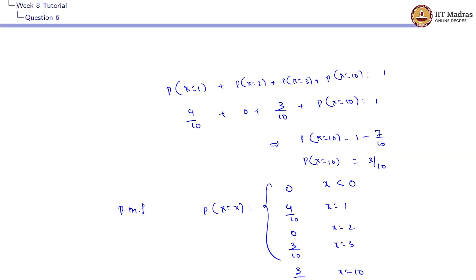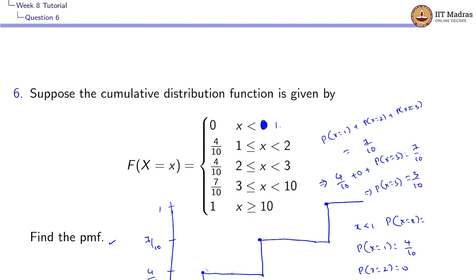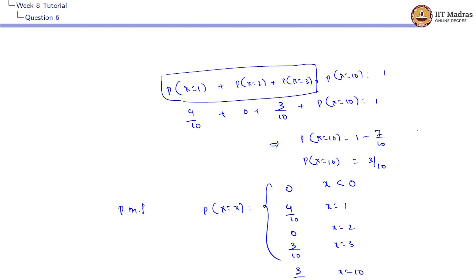You can solve for P(X = 10) in a different way. We already know the cumulative value is 7/10 up to x = 3, so substituting directly: 7/10 + P(X = 10) = 1, which implies P(X = 10) = 3/10. You can solve it directly there.